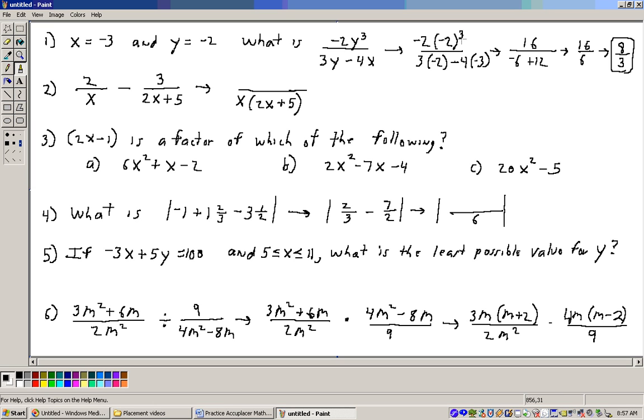Negative 2 cubed is negative 8. Negative 8 times negative 2 is positive 16. 3 times negative 2 is negative 6, and 4 times negative 3 is negative 12, and minus a negative 12 is plus 12. So we have 16 over negative 6 plus 12 is 6, and 16 over 6 reduces to 8 thirds, and that's the answer to the first one.